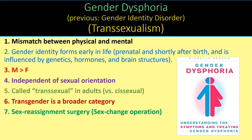Gender dysphoria is not the same thing as sexual orientation. Sexual orientation means who you are attracted to — some people are attracted to men, some to women, some to both, some to neither. Gender dysphoria is sometimes called transsexual in adults, as opposed to cissexual — 'cis' meaning the same, 'trans' meaning across. Transgender is a broader category with many possibilities. Some people have sex reassignment surgery to make their body match their gender identity.